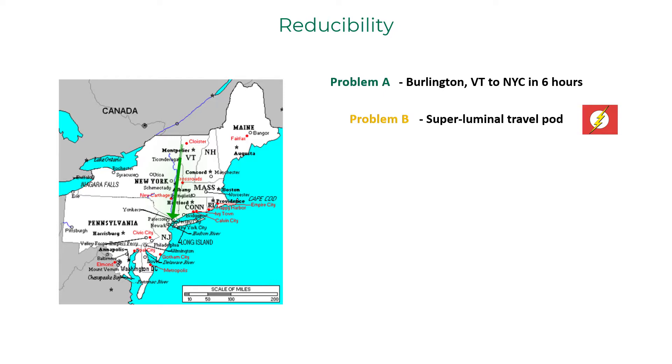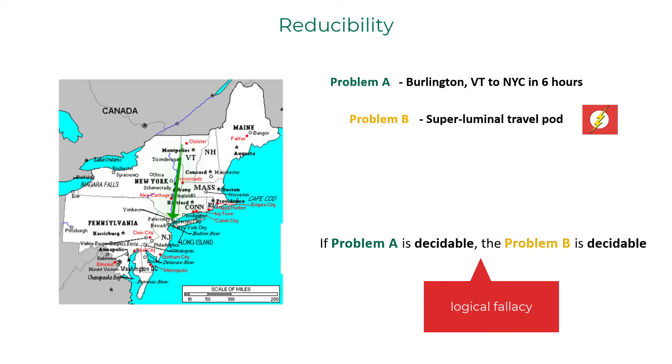Think about this example. The problem of going to New York to Burlington in 6 hours can also reduce to superluminal travelling pod, a vehicle that travels faster than speed of light. Just because you can get to NYC from Burlington within 6 hours does not mean that you have solved superluminal travel.